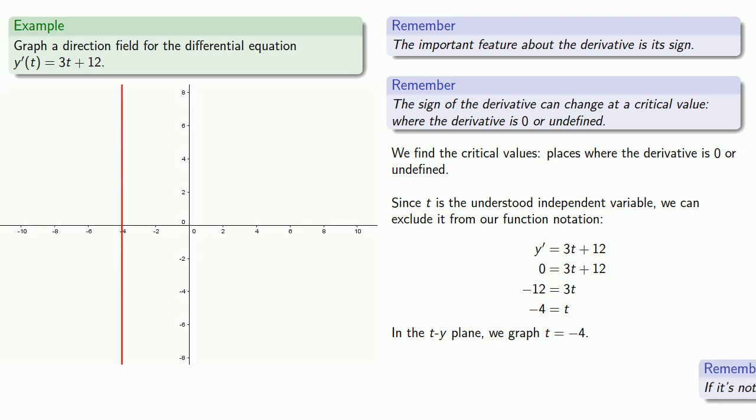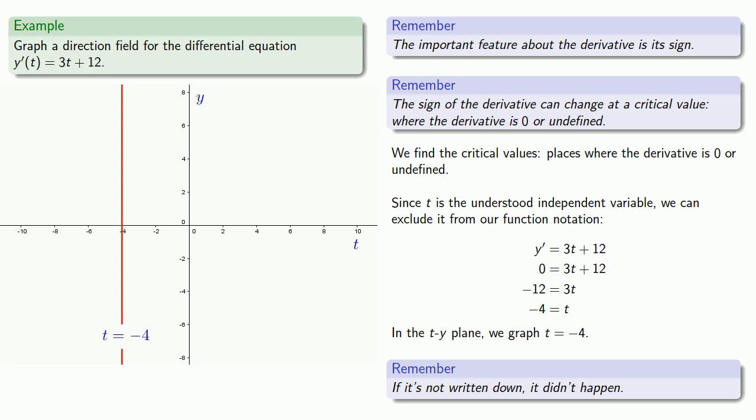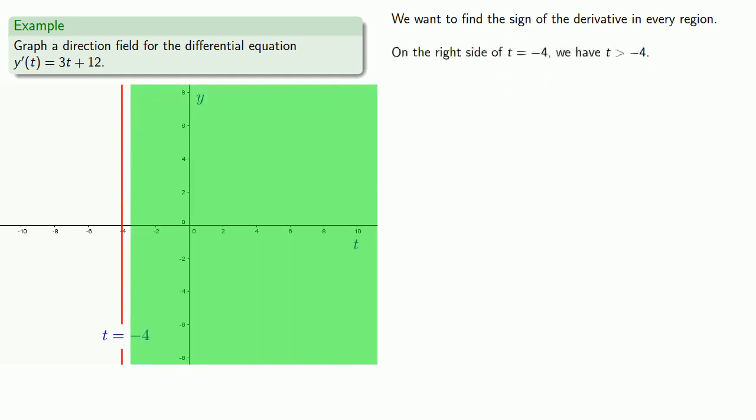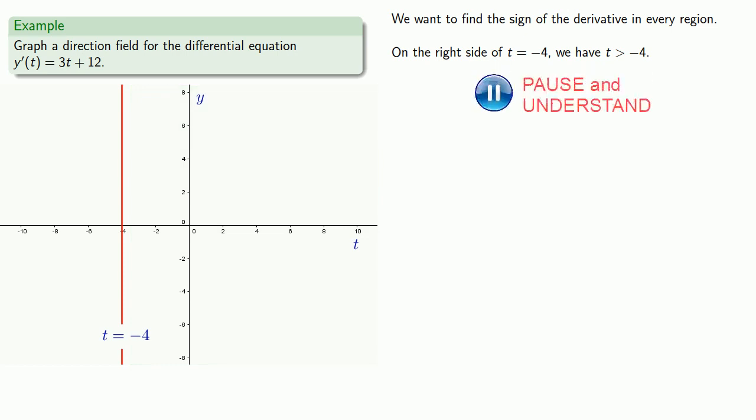And remember, if it's not written down, it didn't happen. We should label our t-axis, our y-axis, and our line t equals negative 4. We want to find the sign of the derivative in every region. On the right side of t equals negative 4, we have t greater than minus 4.